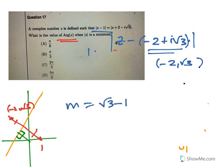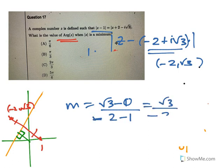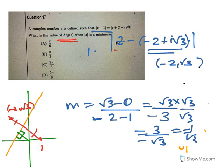The gradient of that line will be root 3 minus 0 on minus 2 minus 1. So it's root 3 on minus 3. If you rationalize that backwards, you get 3 on minus root 3. So it's minus 1 on root 3.